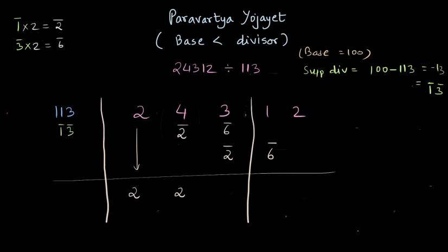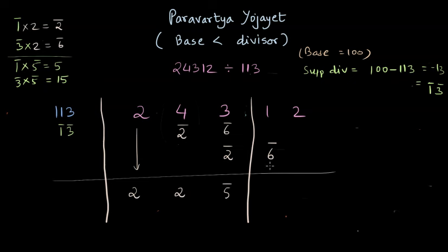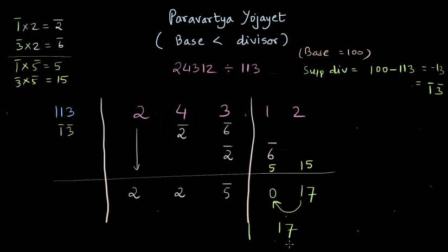We combine the third column: 3 minus 2 minus 6 gives minus 5. We multiply minus 5 by the supplement divisor digits: minus 5 times minus 1 is 5, and minus 3 times minus 5 is 15. We write 5 below the fourth digit and 15 below the last digit. Summing the columns gives 0 and 17, with 1 carrying left, making the remainder 17. Since 17 is a two-digit positive number less than 113, our division is complete.